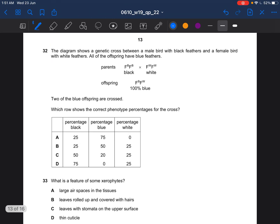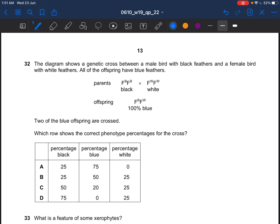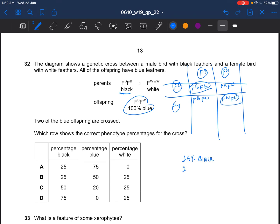Next question. The diagram shows a genetic cross between a male bird with black feathers and a female bird with white feathers. All of the offspring have blue feathers. Two of the blue offspring are crossed. Which row shows the correct phenotype percentages? You can draw a Punnett square. So you will have 25% black, 25% white, and 50% blue. So the answer would be B.